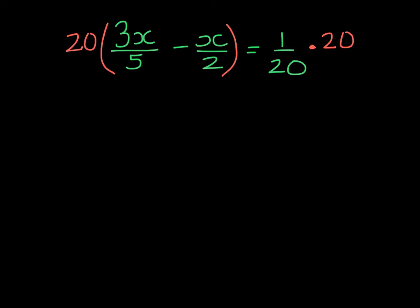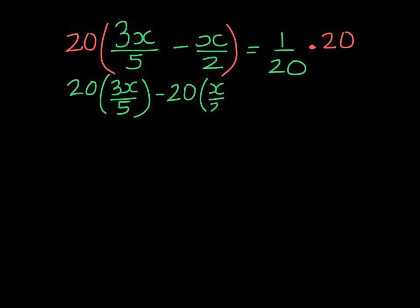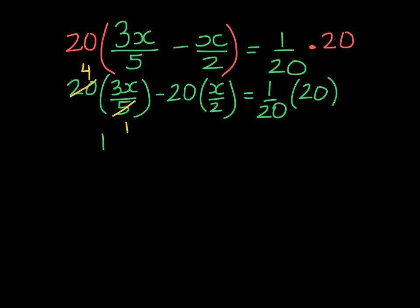On the left-hand side, 20 times 3x over 5, and we're going to subtract 20 times x over 2. And that will be equal to 1 over 20 times 20. 5 goes into 5 once, and into 20 four times, so 4 times 3x gives me 12x.